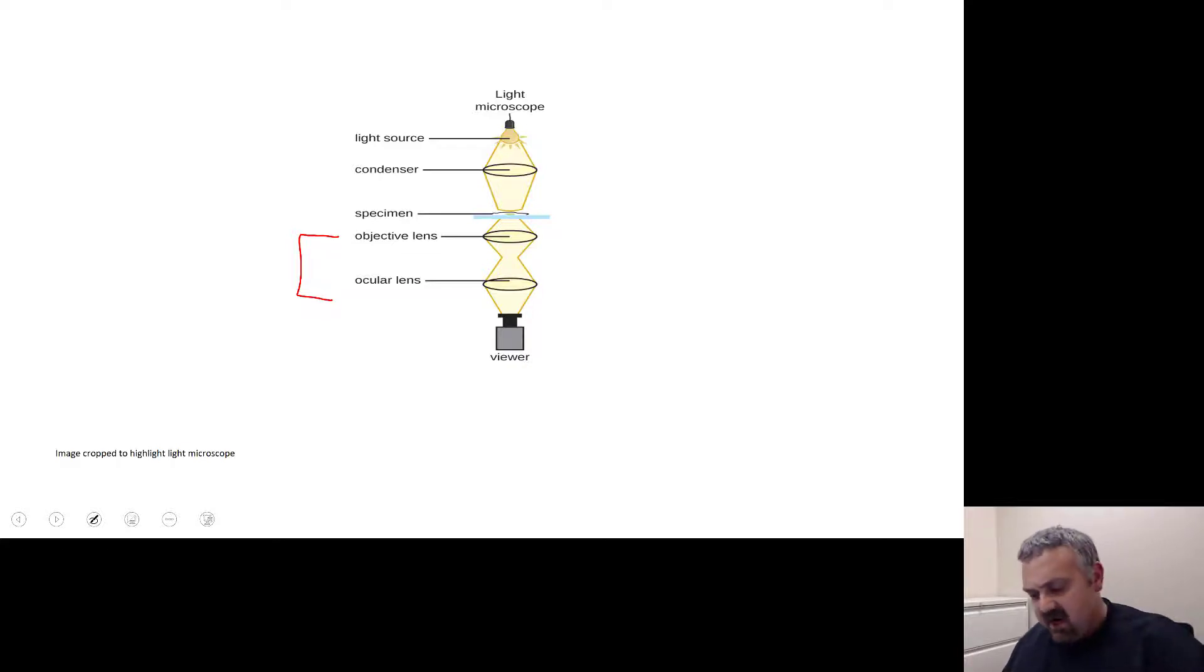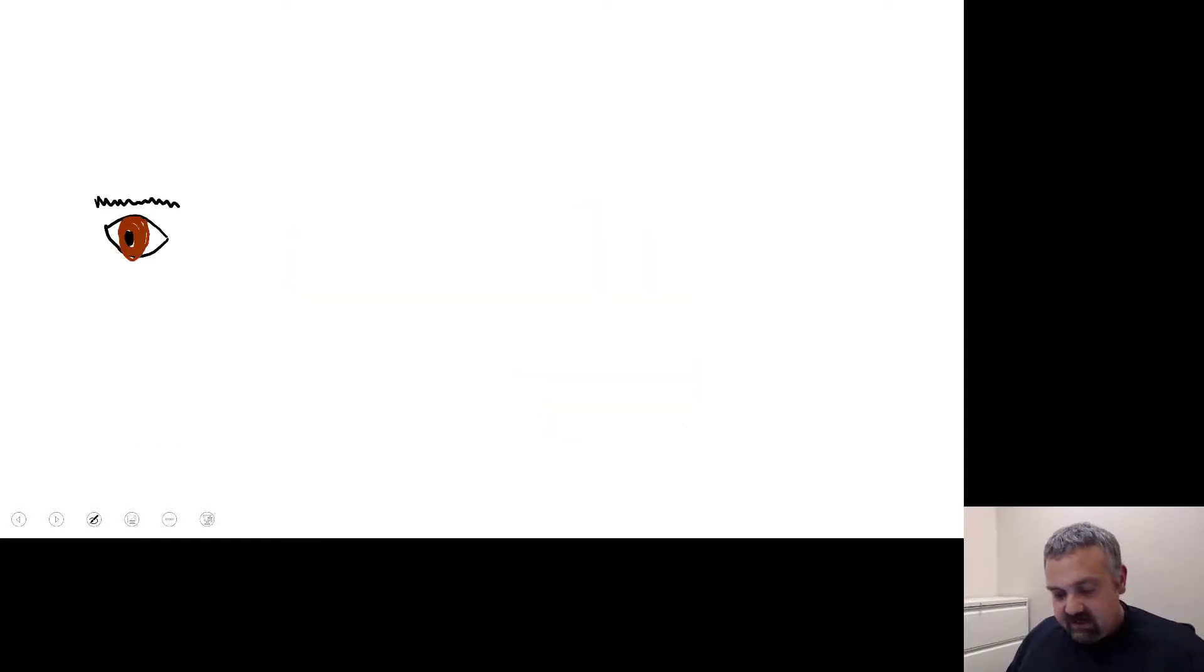So for example, if we're using an oil immersion microscope with a 100x objective, and our ocular has a 10x objective, we're going to get a total magnification of 1,000 times. But how? Well, let's take a look.